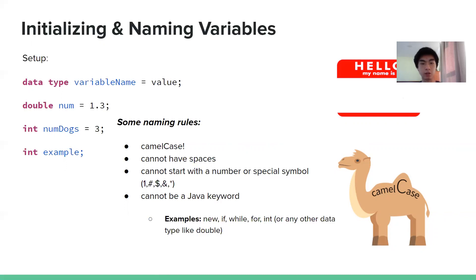So some naming rules. Camel case. We'll go over what that is in just a sec. Cannot have spaces. So you can't have variable space name, you have to have it in one word. You can't start with a number or special symbol. You, however, can have these in your variable name. They just cannot be at the start. And it cannot be a Java keyword. You'll know if it's a Java keyword if it is highlighted in purple, such as double or int.